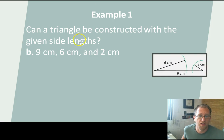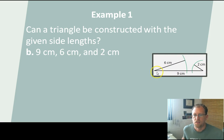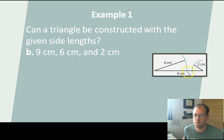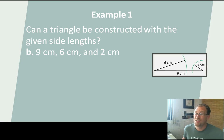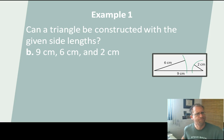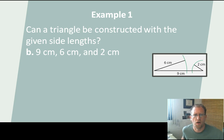Can you draw a triangle with 9, 6, and 2? No, actually you couldn't. You start over here and you arc 6 centimeters away and you arc 2 centimeters away, and those two arcs never run into each other. You can't make that triangle. Hmm, wonder why.